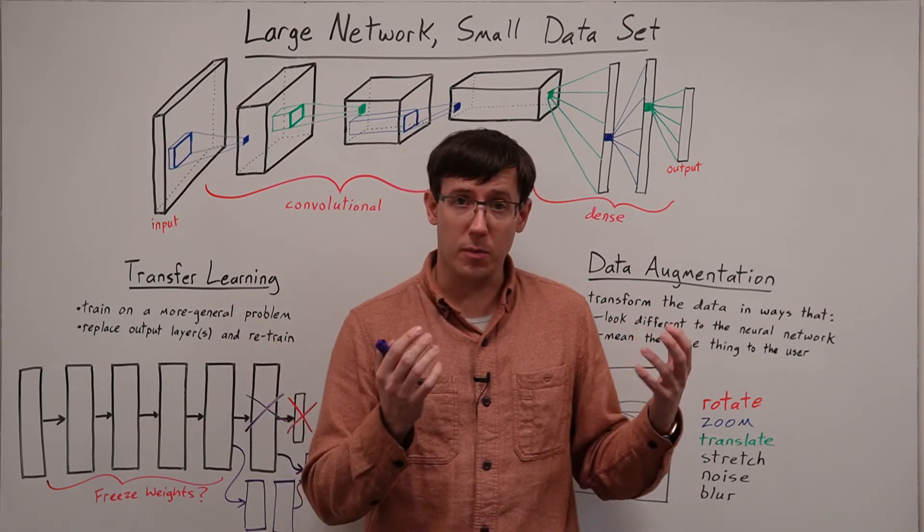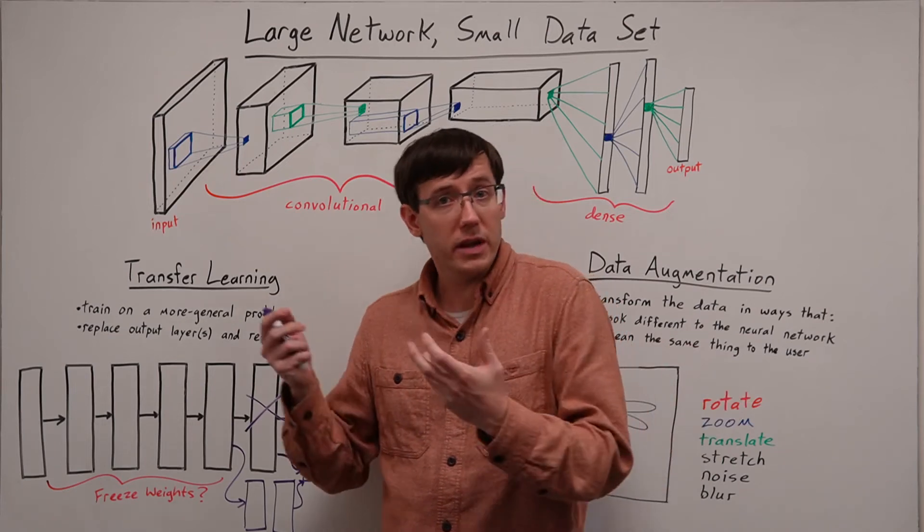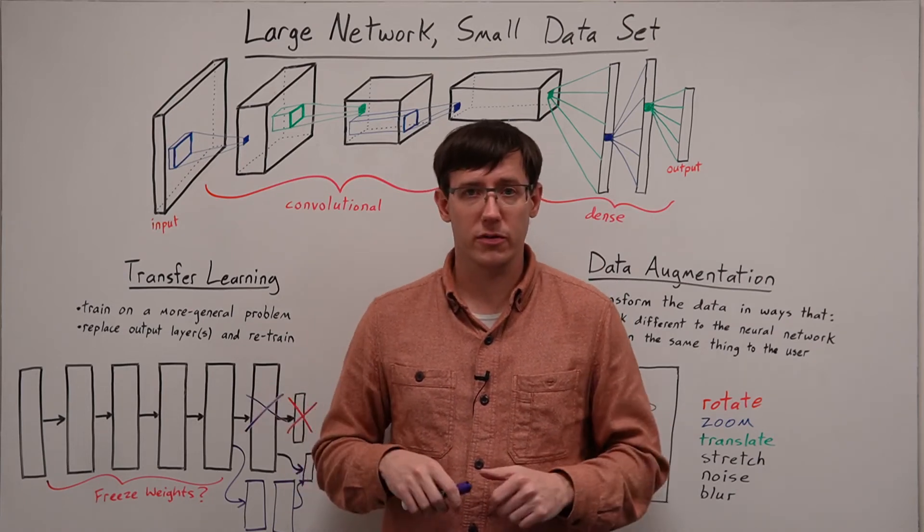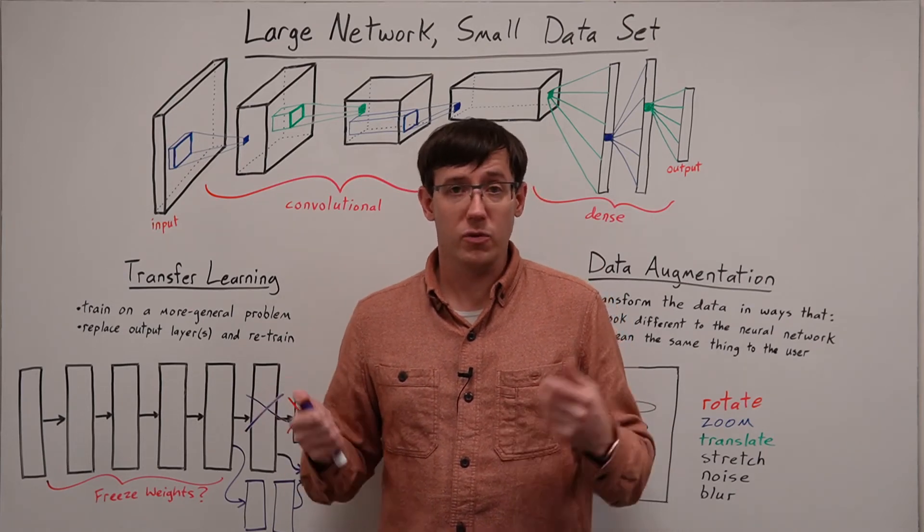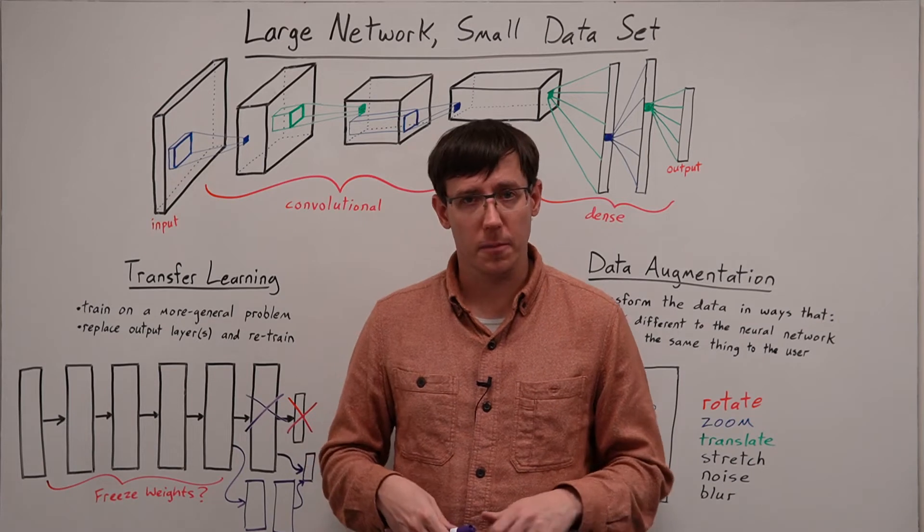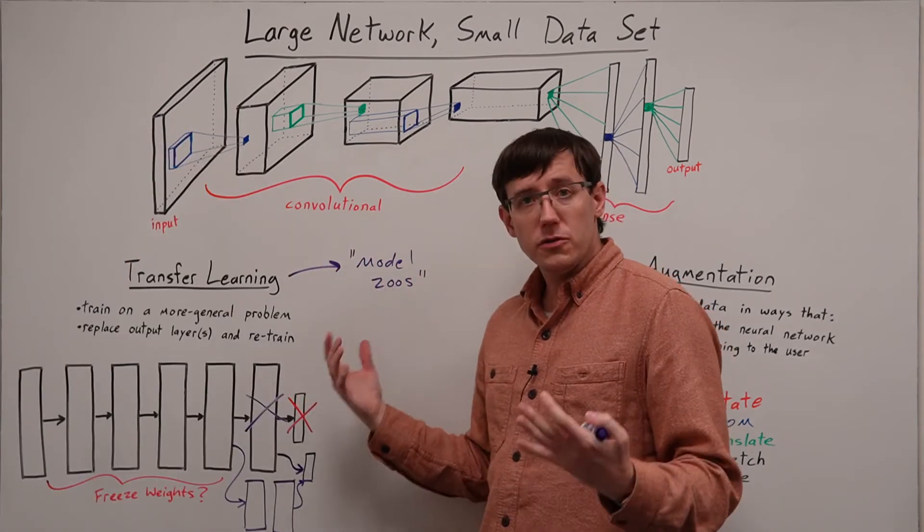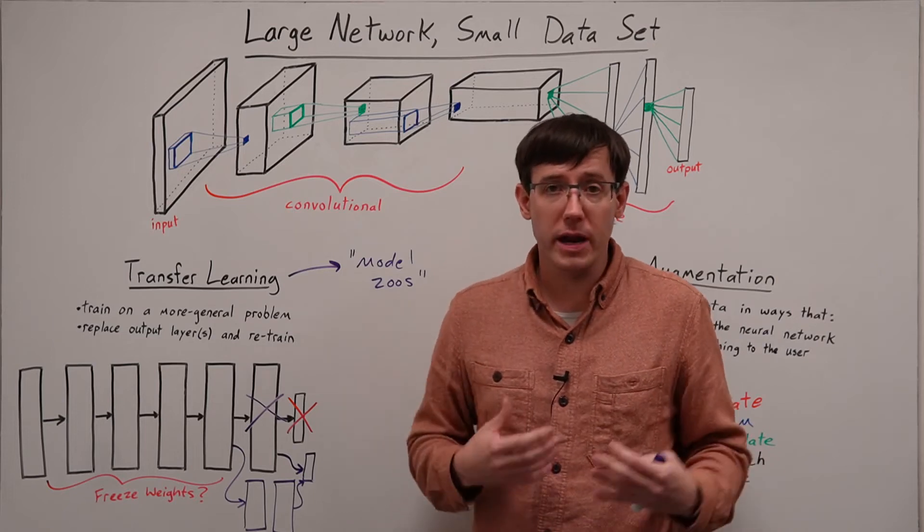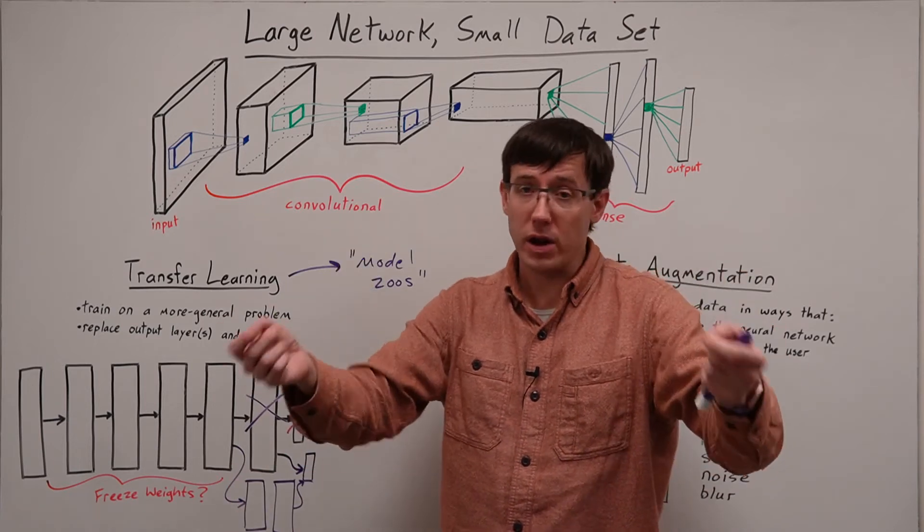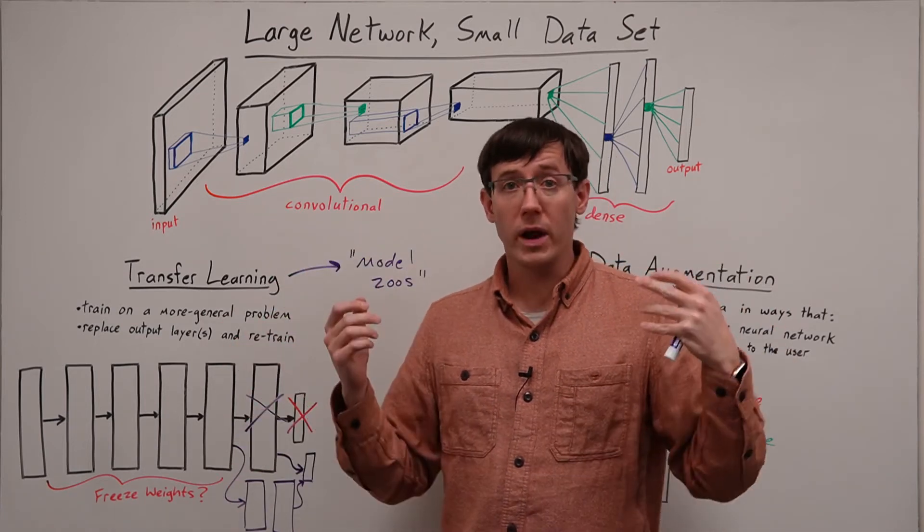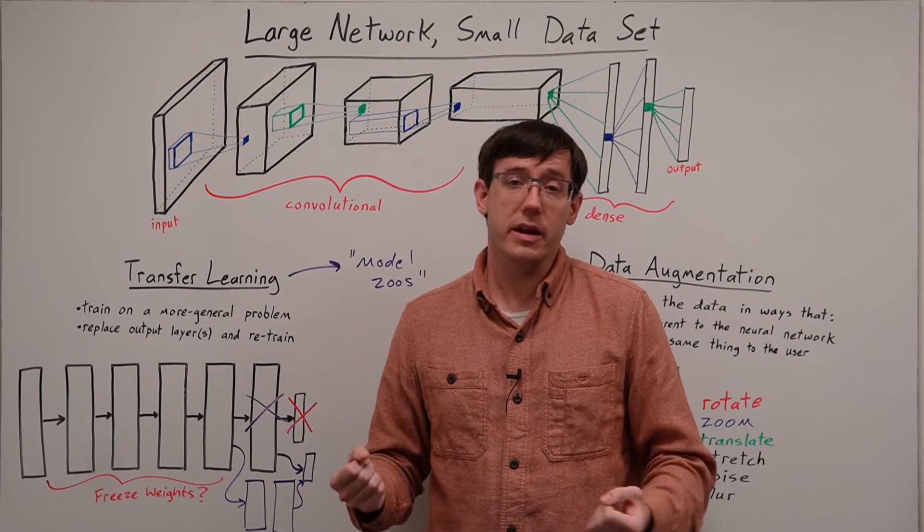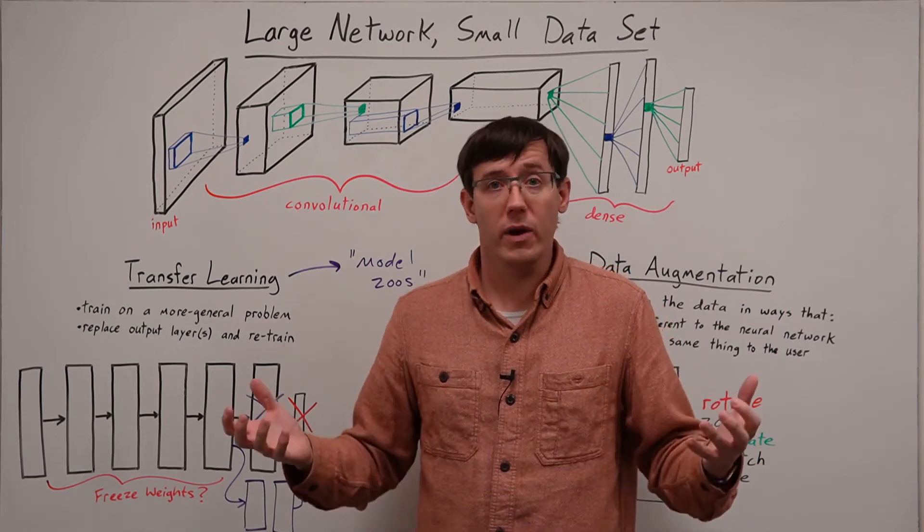So now, whenever we're solving a problem on a small dataset, but there exist models trained on related datasets, we should consider applying transfer learning. And all of the deep learning libraries we've encountered have what are known as model zoos for facilitating transfer learning. A model zoo is a collection of pre-trained models for different types of problems that you can try out as a starting point for transfer learning when you are solving smaller problems. And this is a huge part of what makes deep learning an accessible tool for solving a wide range of different problems.